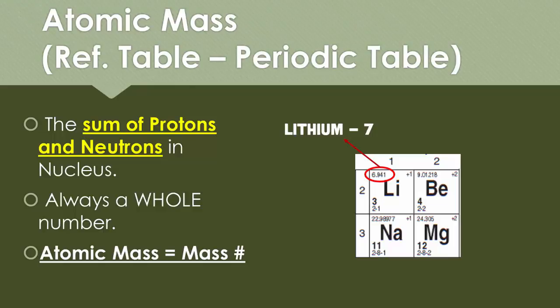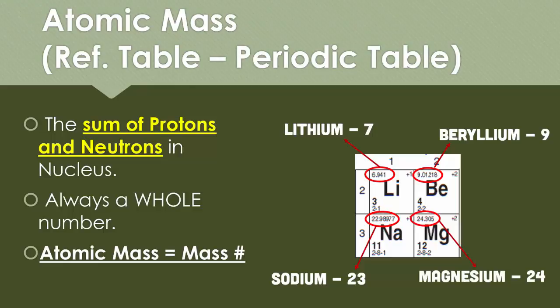Beryllium is going to be written as a 9, sodium will be written as a 23, and magnesium will be written as a 24. And the reason why it's a whole number is because you can't have a partial number of protons and neutrons.